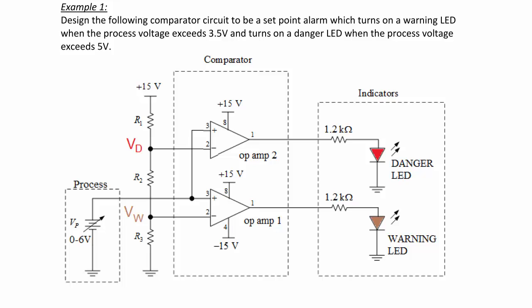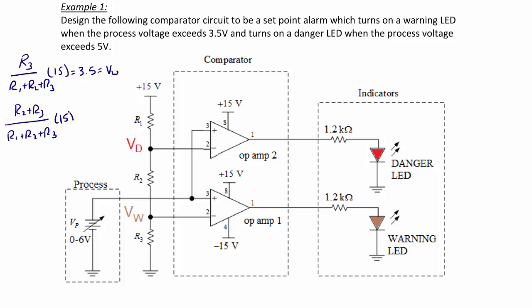To select these resistor values, we use the voltage divider. The first equation is: R3 over (R1 plus R2 plus R3) times 15 must equal 3.5, which is the warning voltage. The second equation is: (R2 plus R3) over (R1 plus R2 plus R3) times 15 must equal 5, which is the danger voltage. We want resistors in the kilohm range and within five percent of the warning and danger values.